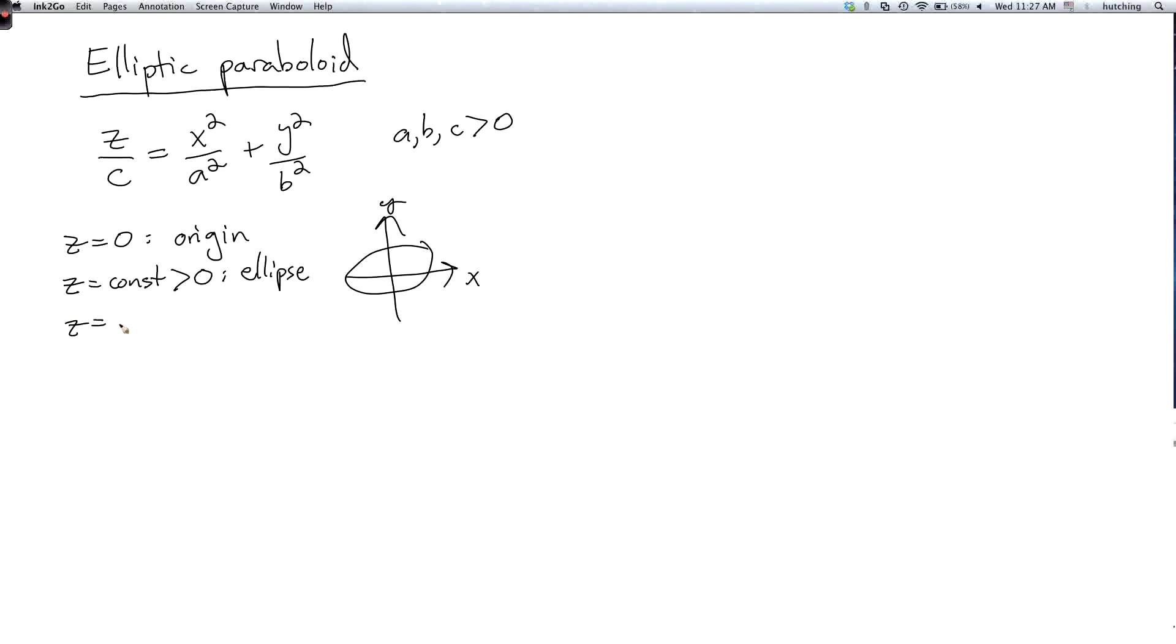If we set z to be a constant which is negative we get the empty set. Because again the sum of squares of real numbers can't be negative.